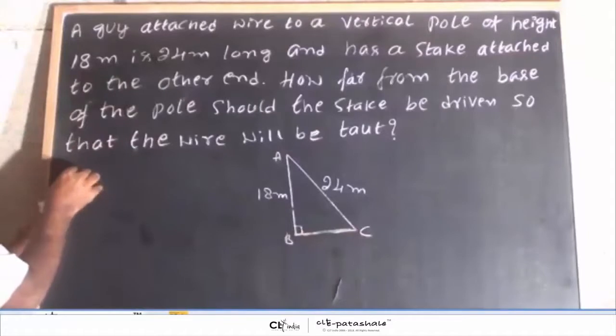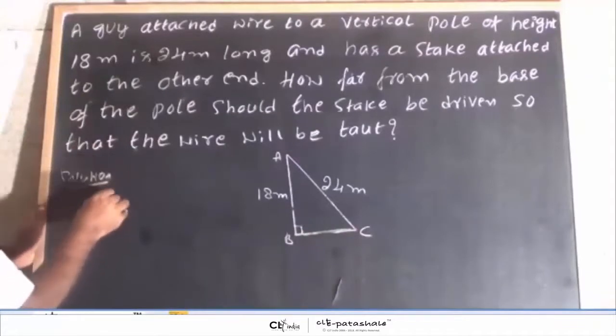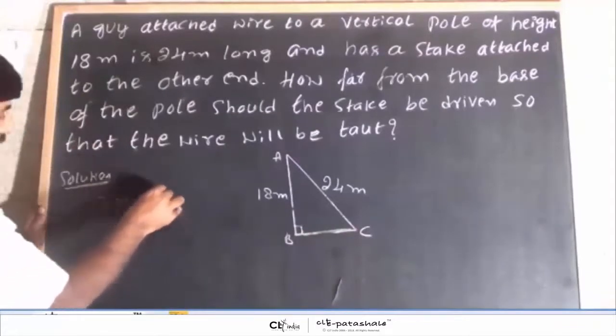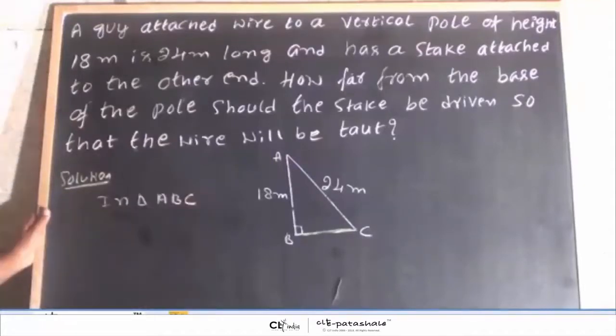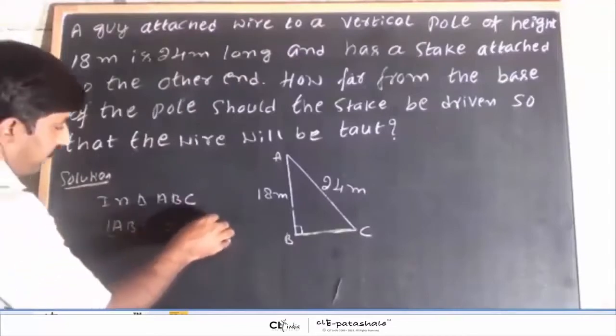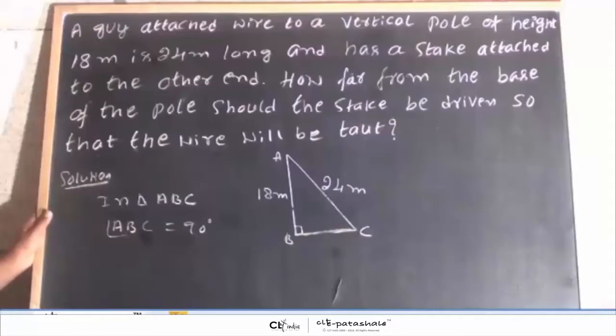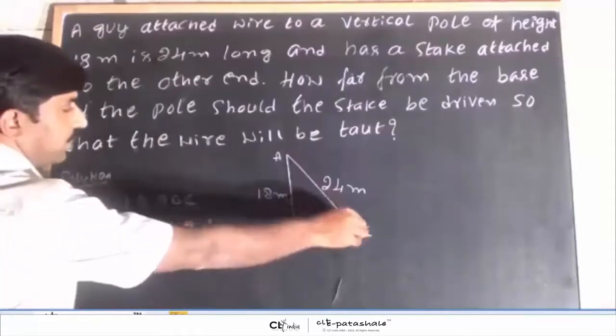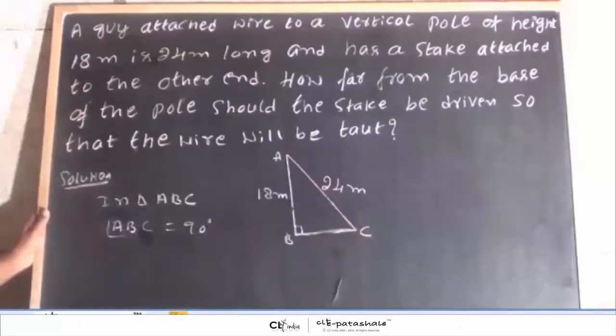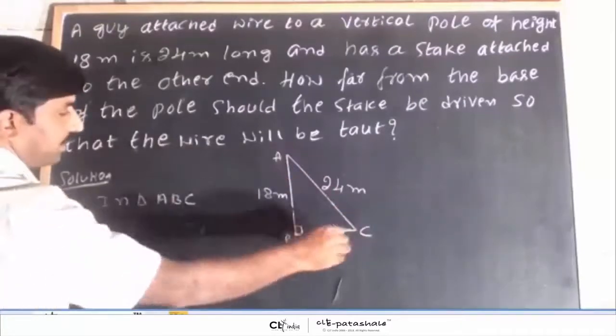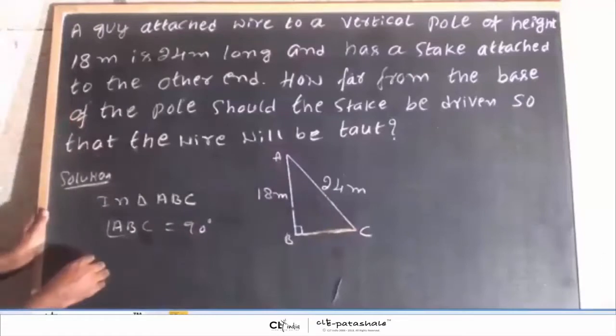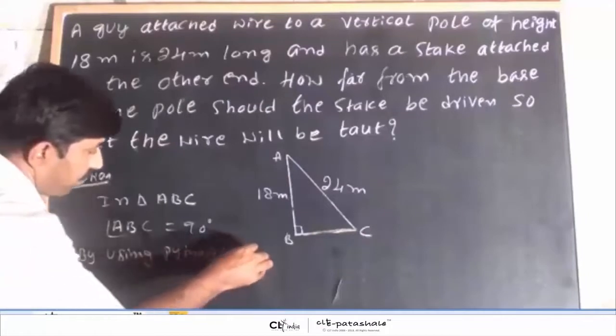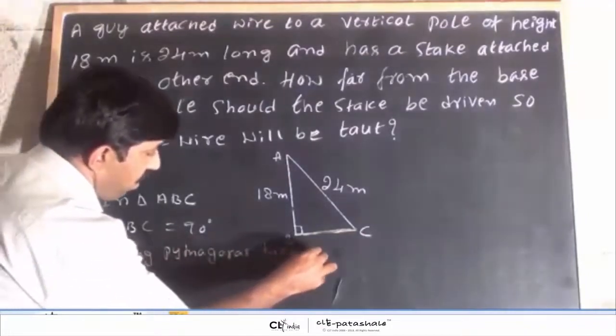See solution in triangle ABC, angle ABC is equal to 90 degree. What does the Pythagoras theorem say? In a right angle triangle, square of the hypotenuse is equal to sum of the squares of the other two sides. Apply the Pythagoras theorem.